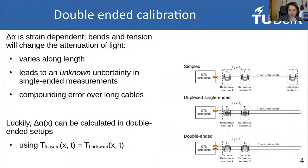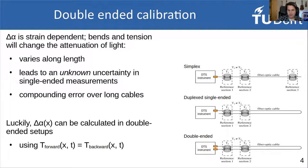The double-ended calibration is nice because it lets you estimate or actually calculate the differential attenuation, which is very useful as it will vary along the length of your cable as your cable experiences bends or tension. Most importantly, it leads to an unknown uncertainty in single-ended measurements — you don't know how the lack of information on differential attenuation is affecting your measurements. In longer cables this error adds up and becomes bigger, while in short setups it generally is not a big issue. But we can actually just calculate the differential attenuation, knowing that the temperature from the forward channel and the backward channel should be the same at the same point in the fiber.